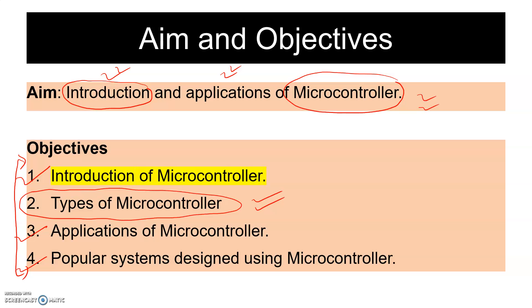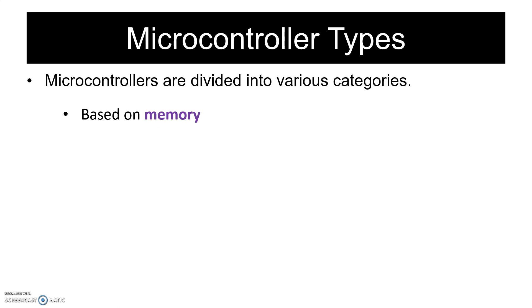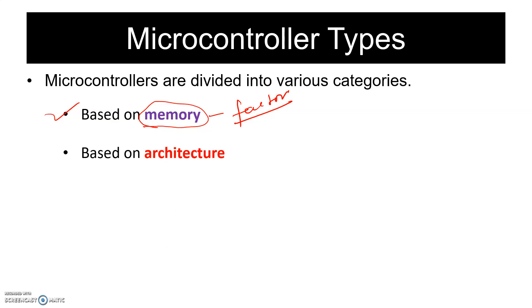Microcontrollers are basically divided into various categories. I have highlighted four most popular categories. The first category classifies microcontrollers based on memory. The second type is based on architecture — types of microcontrollers can be identified based on the type of architecture used.